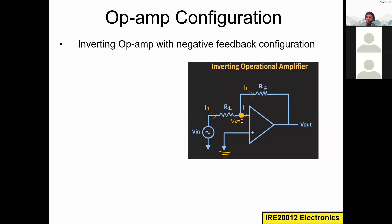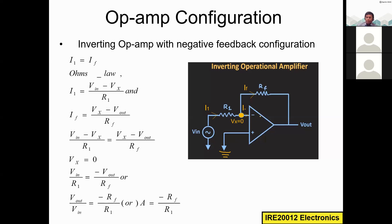Based on the virtual ground concept, this positive terminal is grounded, so that same zero voltage potential appears at this node also. So Vx is equal to zero, meaning I-minus is flowing into this terminal. You should understand what is I1, what is If, what is I-minus, and what is Vx before we derive the equations. We will use KCL, KVL, Ohm's law, and voltage dividers — concepts you have already studied in circuit theory.